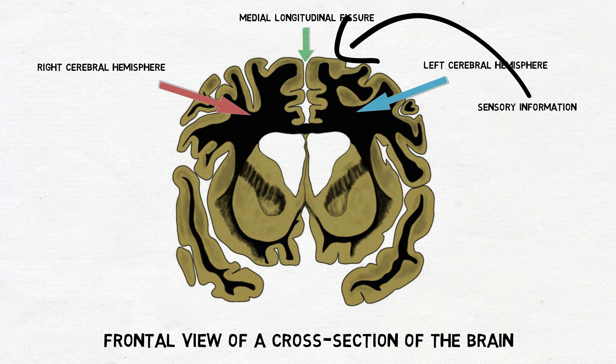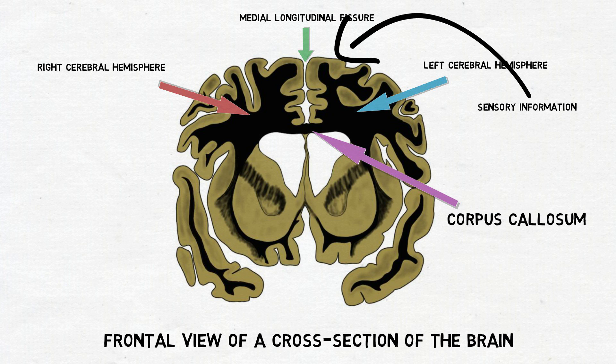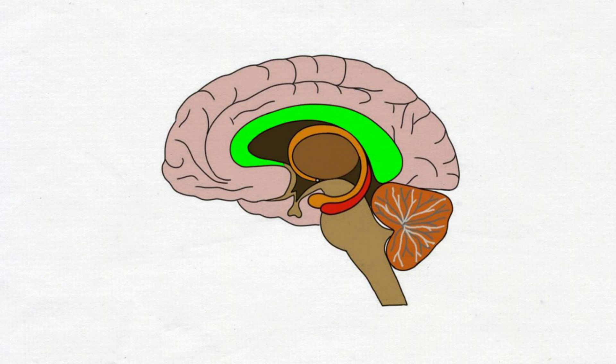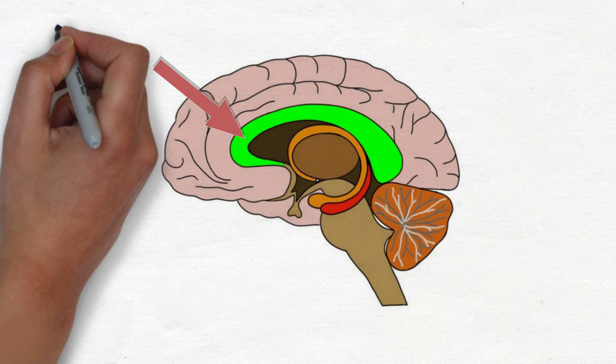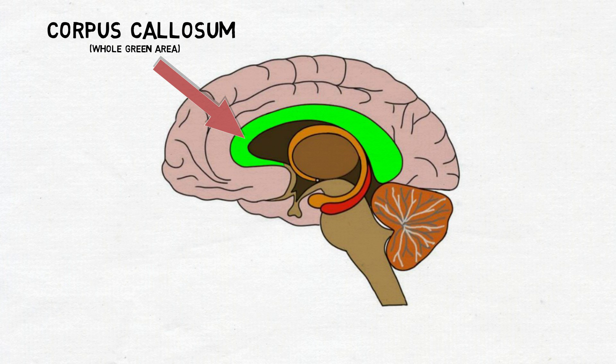That's where the corpus callosum comes into play. It carries information received in one hemisphere over to the other and in general allows for communication between the two hemispheres. The corpus callosum is a large, C-shaped nerve fiber bundle that stretches across the midline of the brain connecting the left and right cerebral hemispheres. It makes up the largest collection of white matter found in the brain.